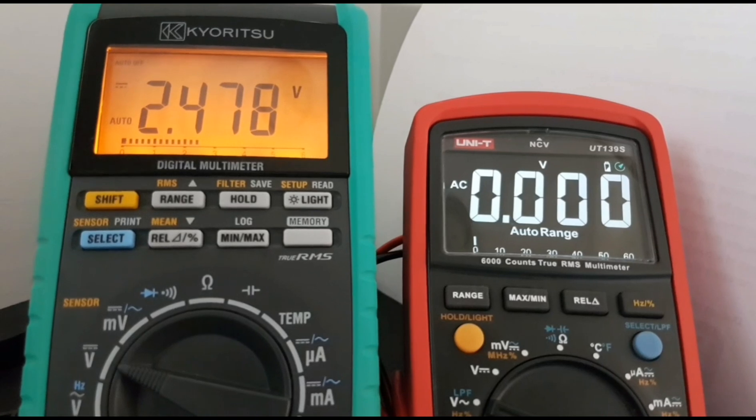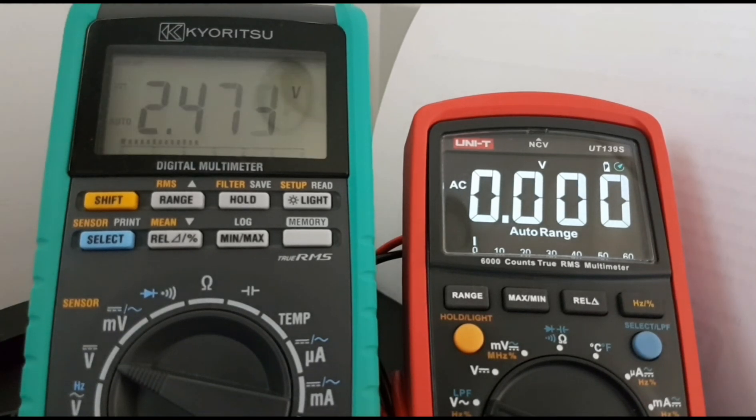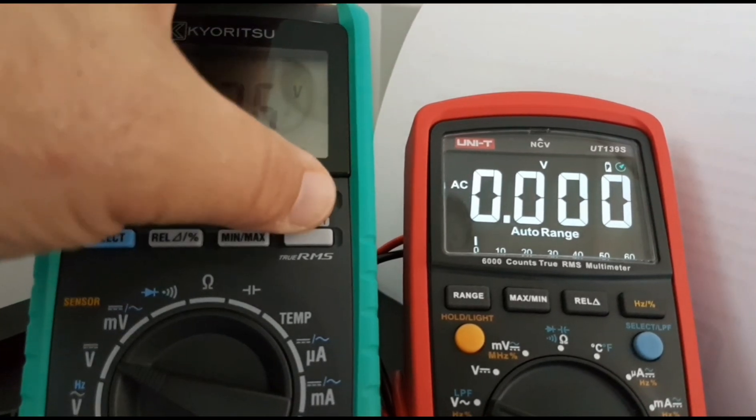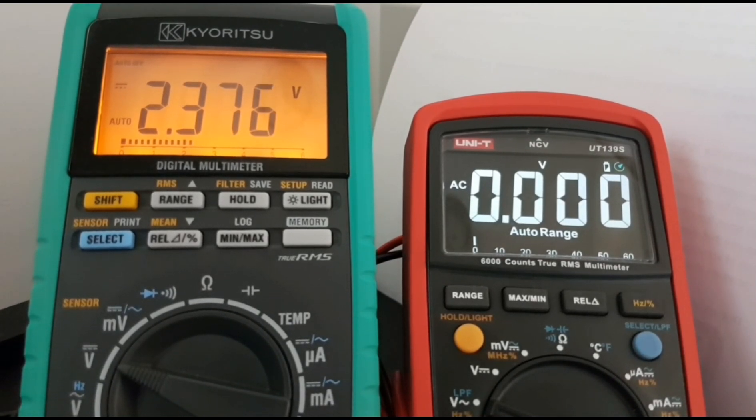2.4 volts and we're getting an audible indicator, but still we're okay in terms of the display itself. Currently at 2.4 volts. Taking it down further. 2.3 volts and we're still good to go. No dimming whatsoever on the screen itself. 2.2 volts—still going strong.